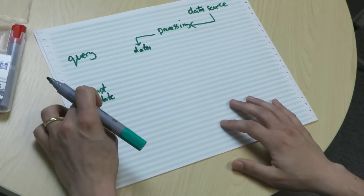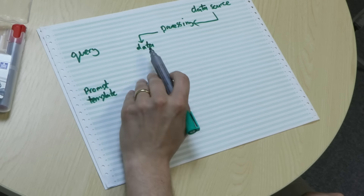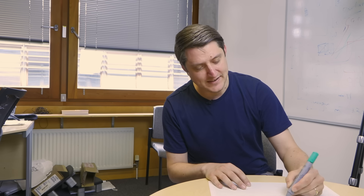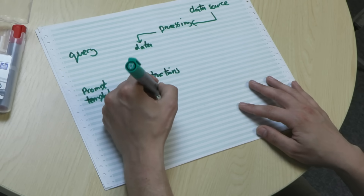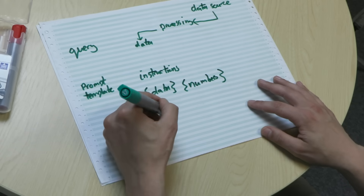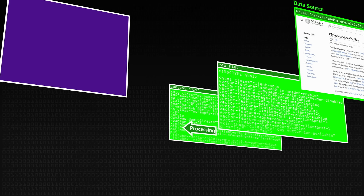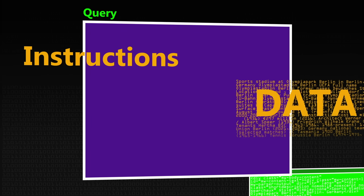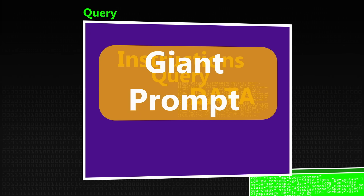We have something called a prompt template, which includes all the information the LLM is going to have directly in its context. This could include system information like 'you are a chatbot trained by OpenAI,' or more specific instructions like 'I'm going to give you some data and a query — please answer based on that. And don't go off and write poems about pirates.' The prompt template has placeholders for instructions, the data or context, the user's query, and maybe final instructions. All of this is converted into a giant prompt of tokens which goes into the large language model, and then it makes its next word prediction and spits out an answer.